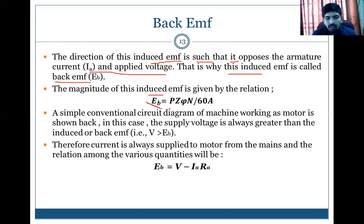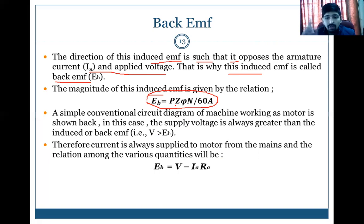The magnitude of the back EMF is given by the formula: EB = (P × Z × N) / (60 × A), where P stands for number of poles, Z stands for number of armature conductors, N is the speed in revolutions per minute (RPM), and A stands for the number of parallel paths. The back EMF generated depends on these quantities according to this formula.